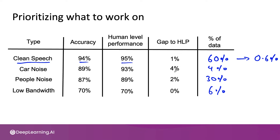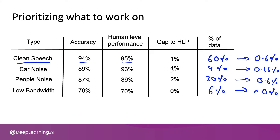On car noise, if we can improve the performance by 4 percent on 4 percent of the data, multiplying that out gives us a 0.16 percent improvement. And for the remaining category, we get 0.6 percent — and essentially 0 percent for low bandwidth since we can't improve that further. So whereas previously we said there's a lot of room for improvement in car noise, in this richer analysis we see that because people noise accounts for such a large fraction of the data, it may be more worthwhile to work on either people noise or clean speech, as both have larger potential for improvement than car noise.